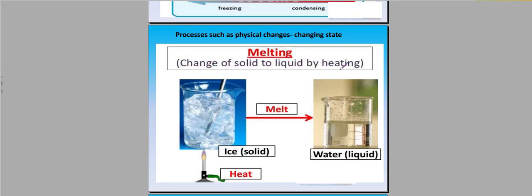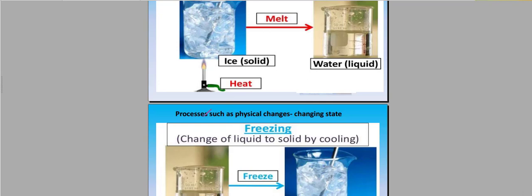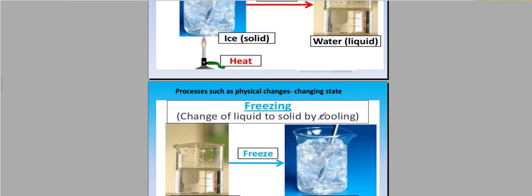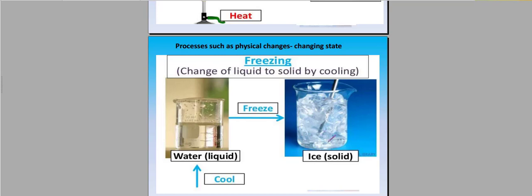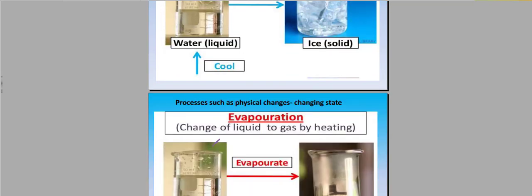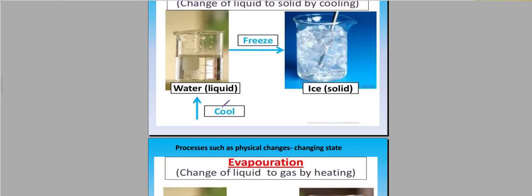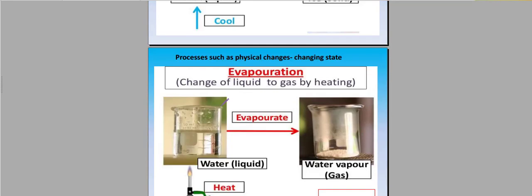Changes of solid to liquid by heating - if the ice has melted, it will change into liquid water. The process is a physical change and changing state. Freezing - water as a liquid will freeze into ice. Next we have processes such as physical change, changing state, evaporation. These three are evaporation, freezing, melting, condensation. You can remember with definitions.